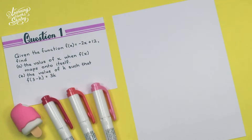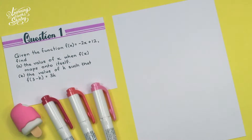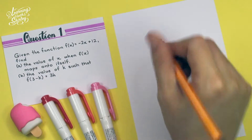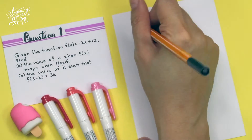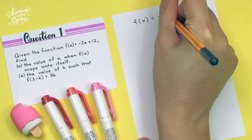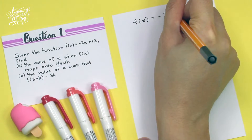For question 1, given the function FX is equal to negative 2X plus 12. Find A, the value of X when FX maps onto itself, and B, the value of K such that F(3 minus K) is equal to 3K. So firstly, we write down the function given, which is FX equals negative 2X plus 12.